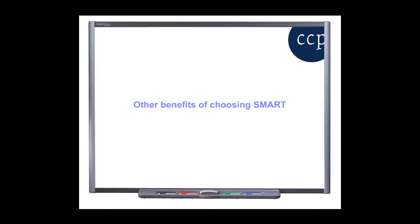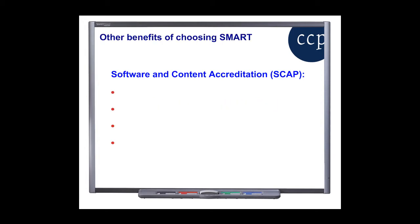Other benefits of choosing Smart Software include the Content Accreditation Program. The Smart Accreditation Program, SCAP, certifies that your content and software will work well on Smart products and give your customers confidence when making purchasing decisions.